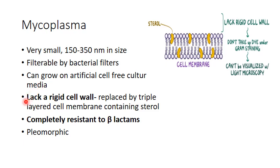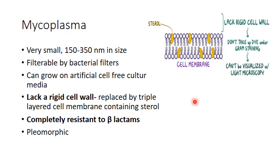One very important characteristic of Mycoplasma is that it lacks a rigid cell wall. Instead, the cell wall is replaced by a cell membrane containing sterol, as we can see here. Because it lacks a rigid cell wall and only has a cell membrane containing sterol, it doesn't take up dye under Gram staining and hence cannot be visualized with light microscopy. As it doesn't have a rigid cell wall, antibiotics that work on the cell wall are ineffective, and hence Mycoplasma are completely resistant to beta-lactams.